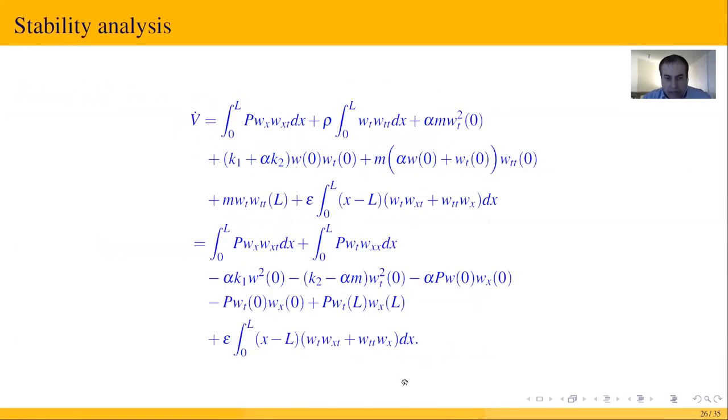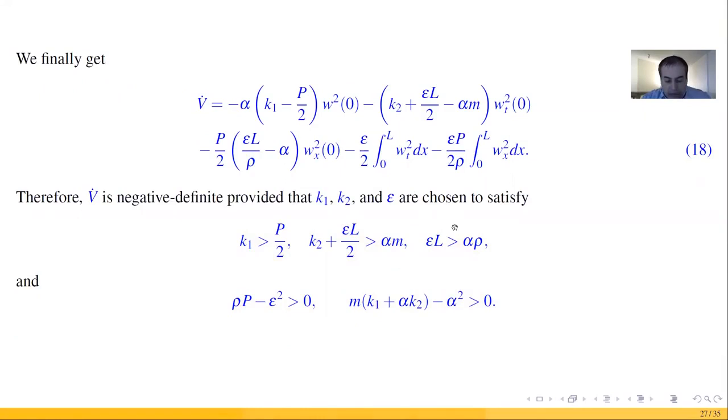In equation 18, the analysis to compute c1 and c2 for orbital stability analysis is similar for the finite-dimensional system.